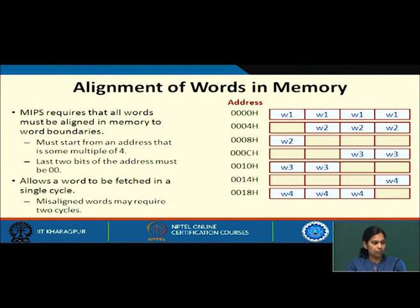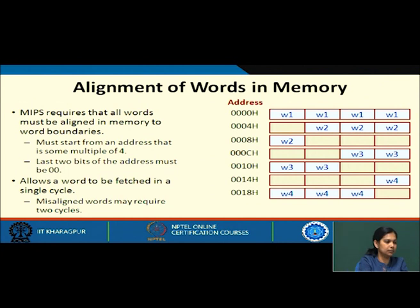Now let us see what is word alignment — it is alignment of words in memory. MIPS always requires that all the words stored in memory must be aligned to word boundaries. That means they must start from an address that is some multiple of 4. You can see the first address is 0000, then 0004, then 28, again 0, 4, 8 and so on.